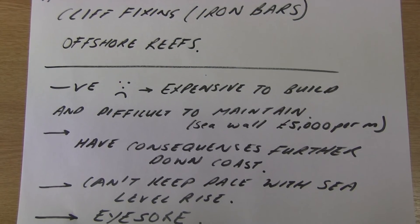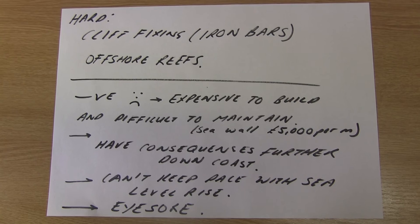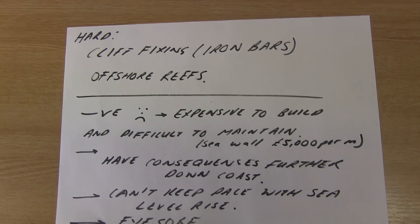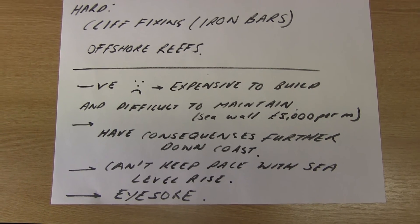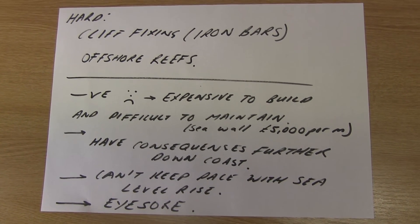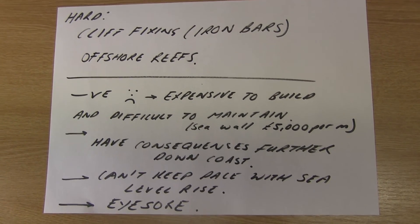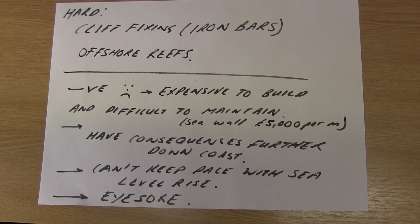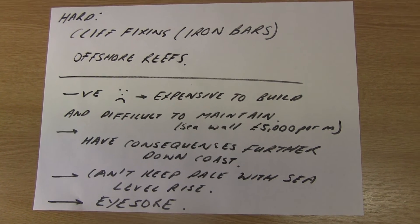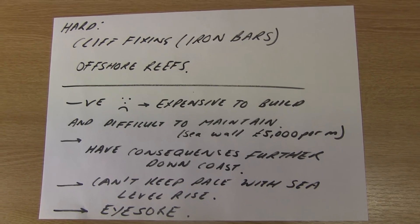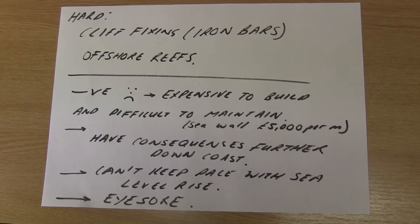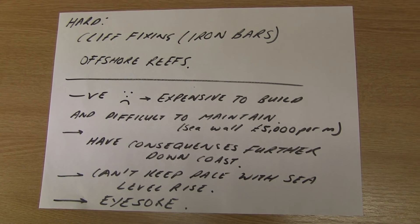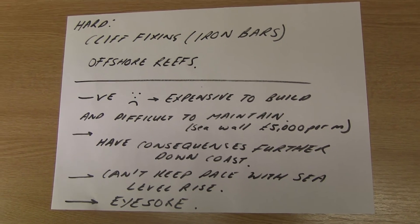There are negatives to all of these hard engineering approaches — they are very expensive to build and difficult to maintain. A seawall costs on average £5,000 per metre, which is huge. Hard engineering also has effects further down the coast: groins trap sediment in one location, meaning the next location down has no beach, which can encourage further erosion. Sea levels are rising and these structures sometimes can't keep pace. Some also consider them an eyesore, though personally I quite like a sea defence — I'm a bit biased being a geographer.